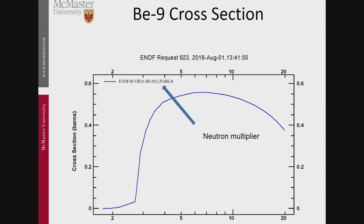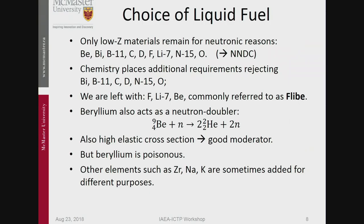Then beryllium — chemistry rejects bismuth, boron-11, carbon, deuterium, and nitrogen-15. Why only nitrogen-15? Because nitrogen-14 would absorb neutrons — you don't want that. And oxygen — you don't want to have oxygen in there, and this is all chemistry. So we are left with fluorine, which is really good — you'll see that all the molten salts are always fluorides — lithium-7, which is really good, and beryllium, which is so-so. This combination is commonly referred to as FLIBE.